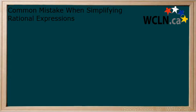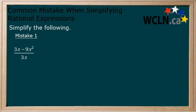First, let's consider the common error made when simplifying these types of questions. Simplify the following rational expression. Right away you see that you have a 3x in both the numerator and denominator. Your first instinct might be to cancel the 3x's for the final answer of negative 9x squared.